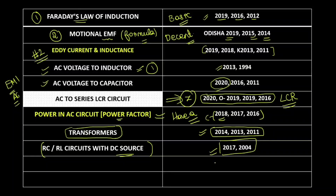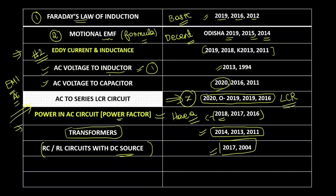As a quick take-home message: the series LCR circuit is very very important, and the second most important topics are eddy currents and power factor. Additionally, AC voltage applied to an inductor and motional EMF are key topics. These are the stuffs I wanted to tell you in this catch-the-trend analysis for EMI and AC.